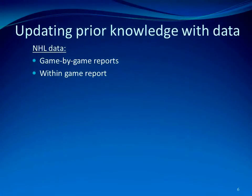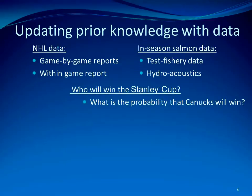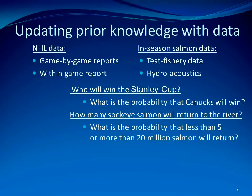Now, in-season we could rely on additional data collected to update that knowledge. So what type of information do we have in-season to update our prior knowledge? In our example of the Stanley Cup, we have game-by-game reports on how the different teams are doing in the playoffs. For Fraser River sockeye salmon, our in-season information on the run size consists of test fishery data and hydroacoustics data collected at Mission. By updating the prior with the newly collected information, we can update our knowledge and answer questions such as: how many sockeye will return, and what is the chance that the run size will be less than 5 million or more than 20 million?